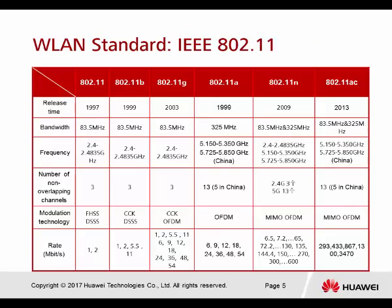This table shows all the different types of 802.11 versions. The release times are different. The bandwidth for 802.11 B and G uses the same bandwidth. 802.11 N and AC can support up to 325 MHz. The number of non-overlapping channels in 802.11 B, G, and N is 3. For 802.11A, there are 13 non-overlapping channels, but in China there are only 5. This is also the same for 802.11 AC.